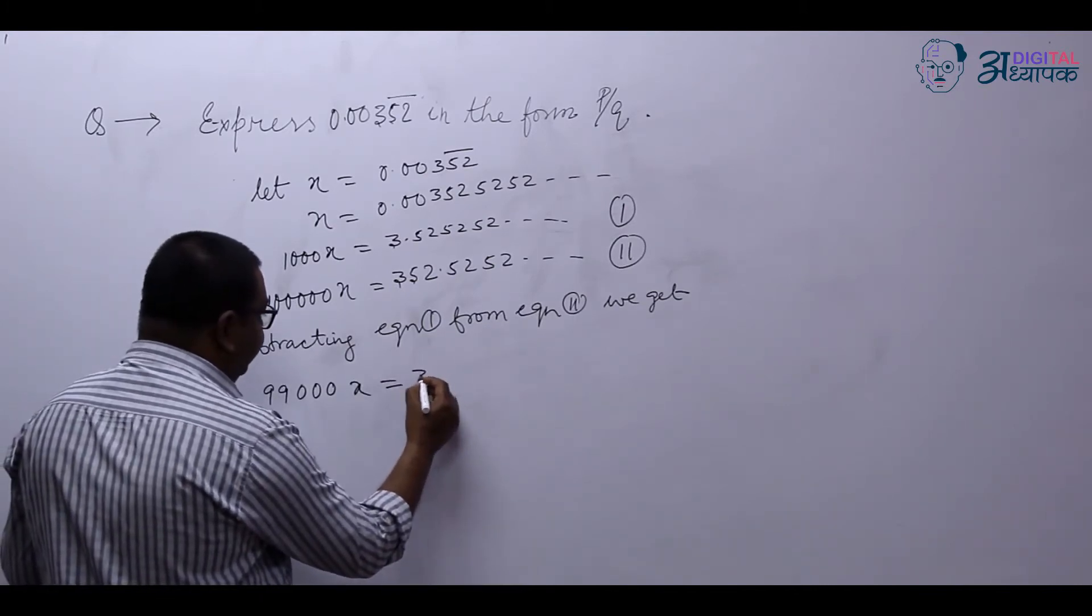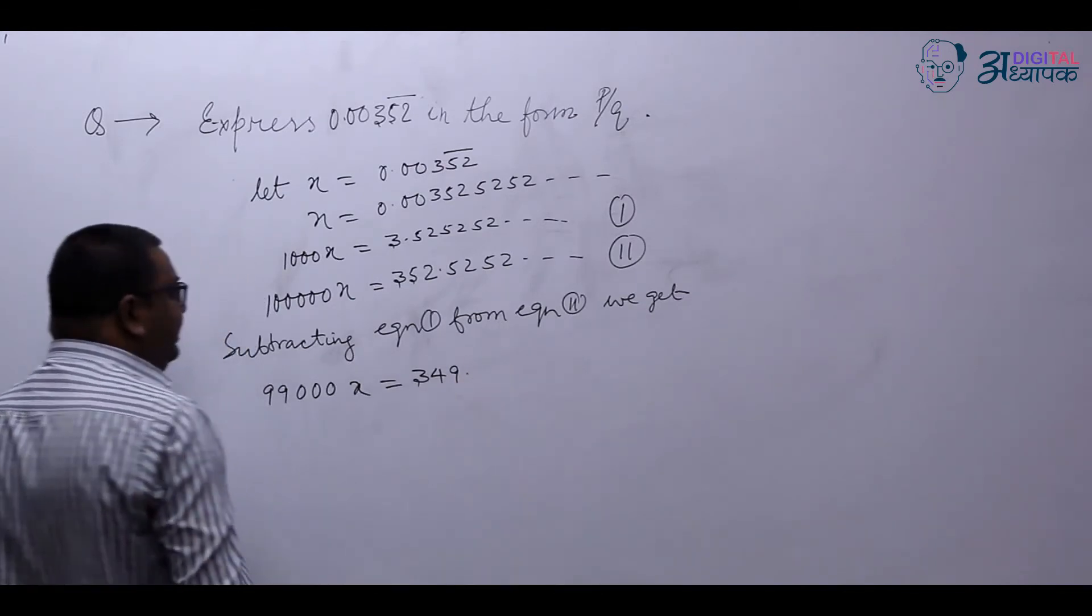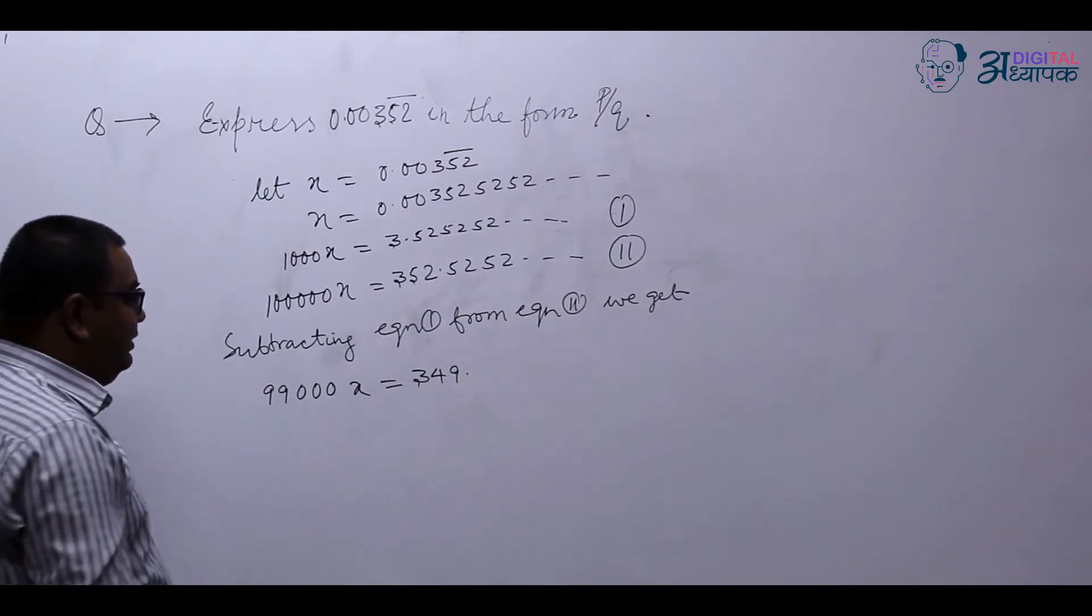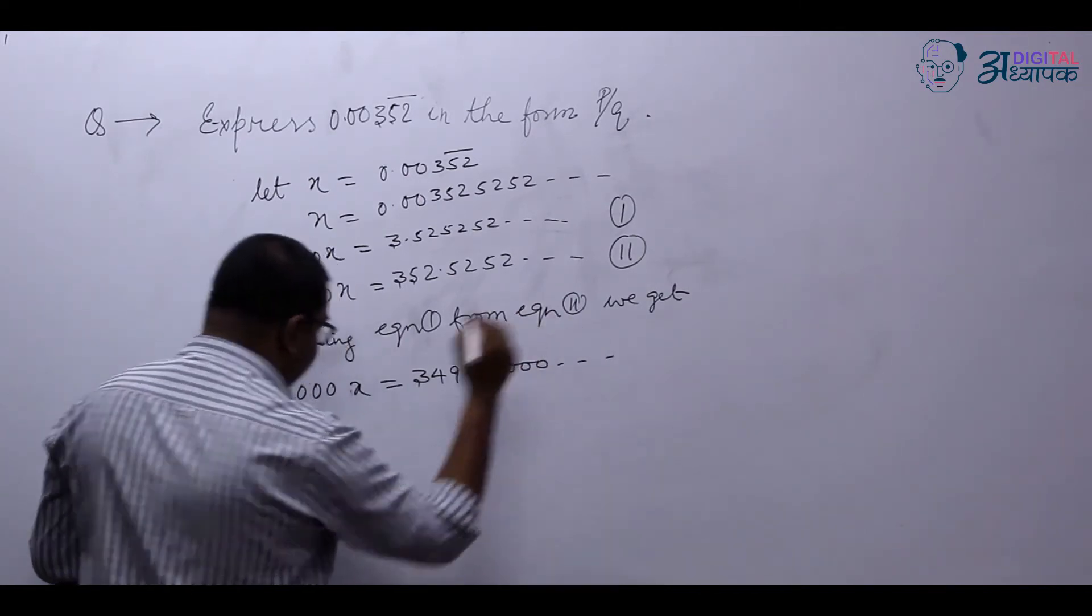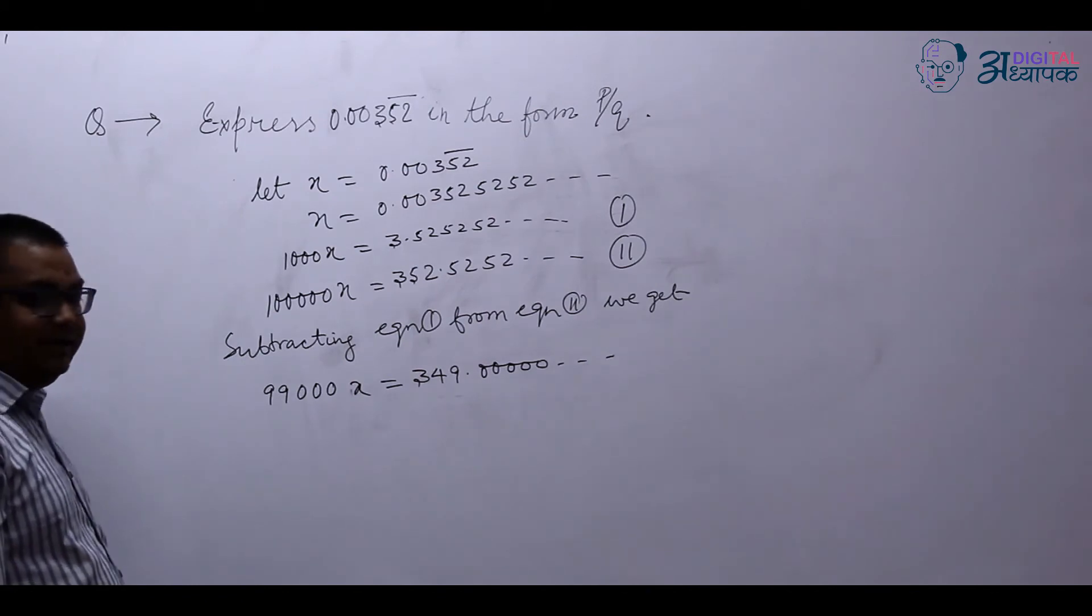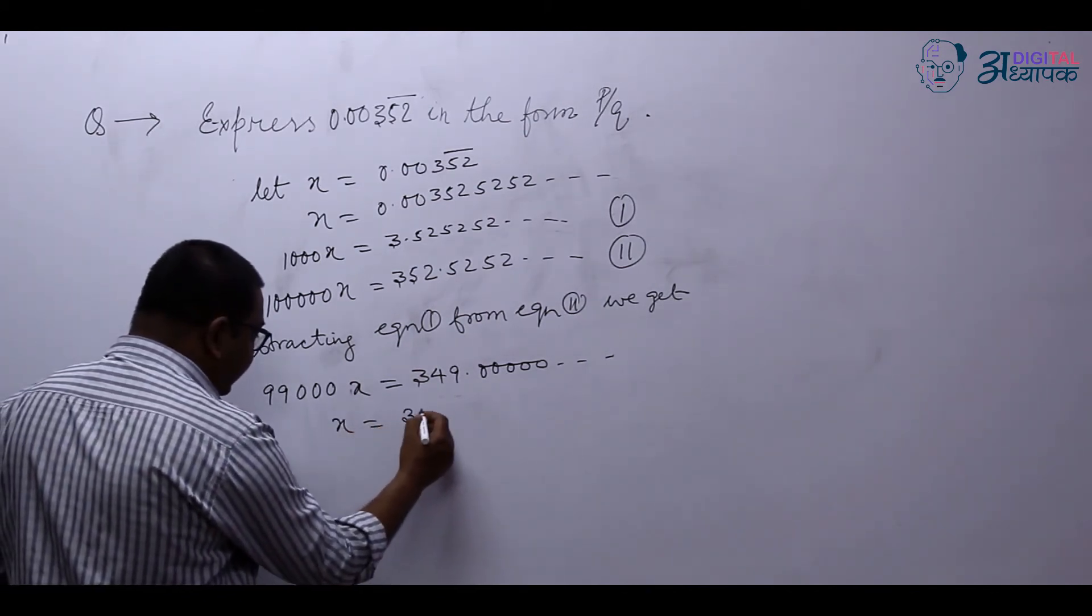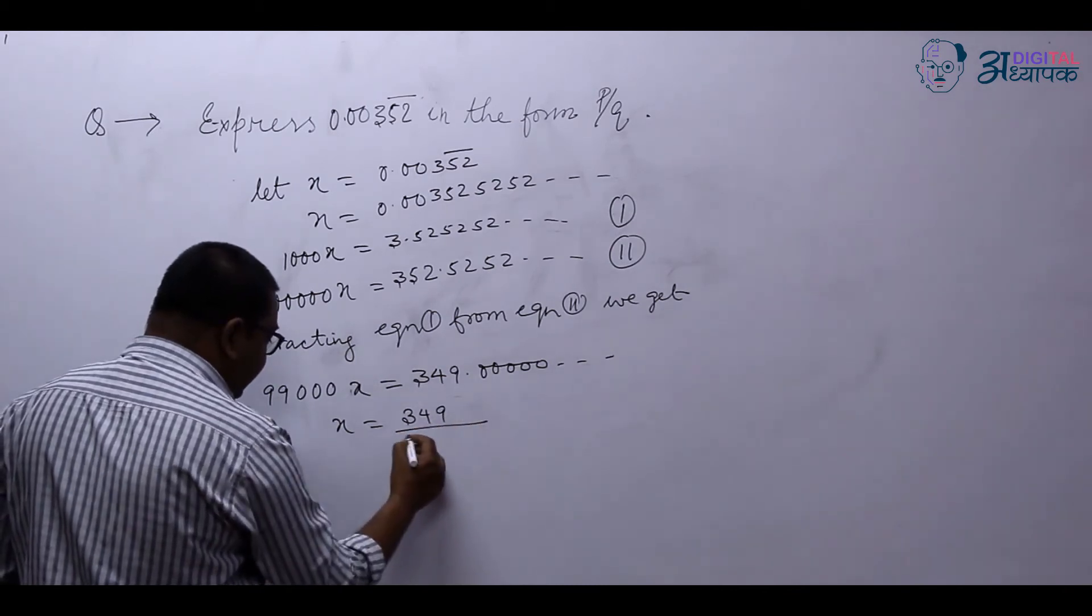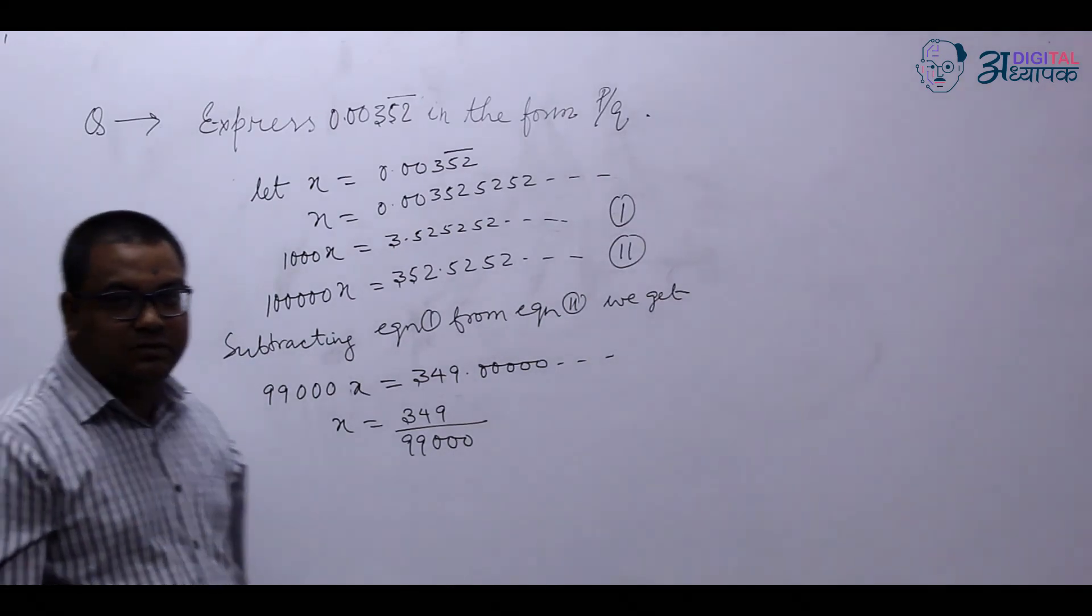Subtracting gives 99000x equals 349, so x is equal to 349 divided by 99000. Thank you.